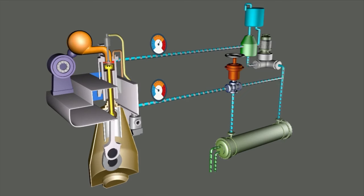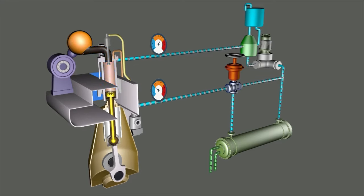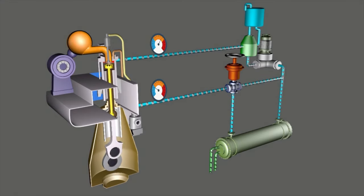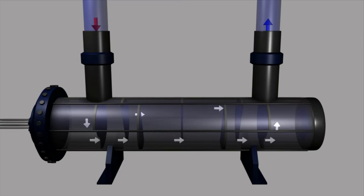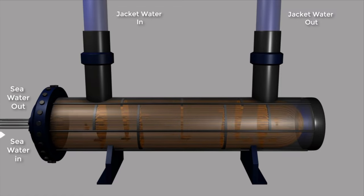As the fresh water is in closed circuit, it will get heated up when cooling the engine jacket, head and exhaust valves. The high temperature of the fresh water returning from the engine needs to be reduced before reintroducing it again to the main engine. A sea water cooler is placed in the line between the jacket water pump and engine inlet to reduce the fresh water temperature.